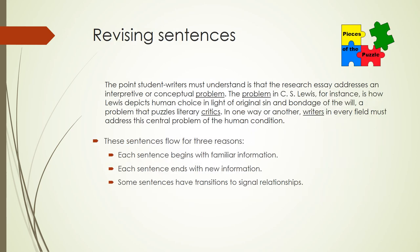Here is my revised series of sentences with improved cohesion: 'The point student writers must understand is that the research essay addresses an interpretive or conceptual problem. The problem in C.S. Lewis, for instance, is how Lewis depicts human choice in light of original sin and bondage of the will, a problem that puzzles literary critics. In one way or another, writers in every field must address the central problem of the human condition.' Unlike the original series, these sentences flow for three reasons. Each sentence begins with familiar information — either a general term like 'student writers,' or a key term introduced in the prior sentence, like 'conceptual problem' introduces 'problem,' and 'literary critics' introduces the close synonym 'writers.' Beginning new sentences with familiar information creates the experience of flow for readers.